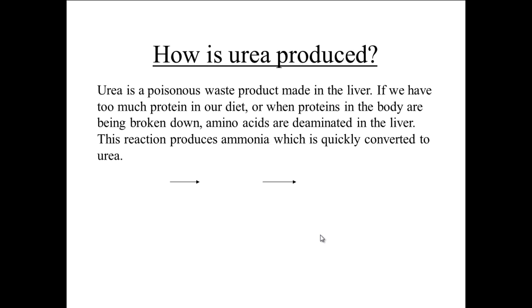The excess proteins are broken down into their individual monomers, which are amino acids. These are then converted into ammonia through a process known as deamination.